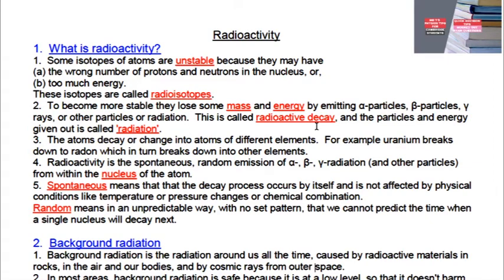This is called radioactive decay, and the particles and energy given out is called radiation. The atoms decay or change into atoms of different elements. For example, uranium breaks down to radon, which in turn breaks down into other elements. Radioactivity is the spontaneous random emission of alpha, beta and gamma radiation and other particles from within the nucleus of the atom. By definition, radioactivity is the random spontaneous disintegration of an unstable nucleus to give a more stable one.